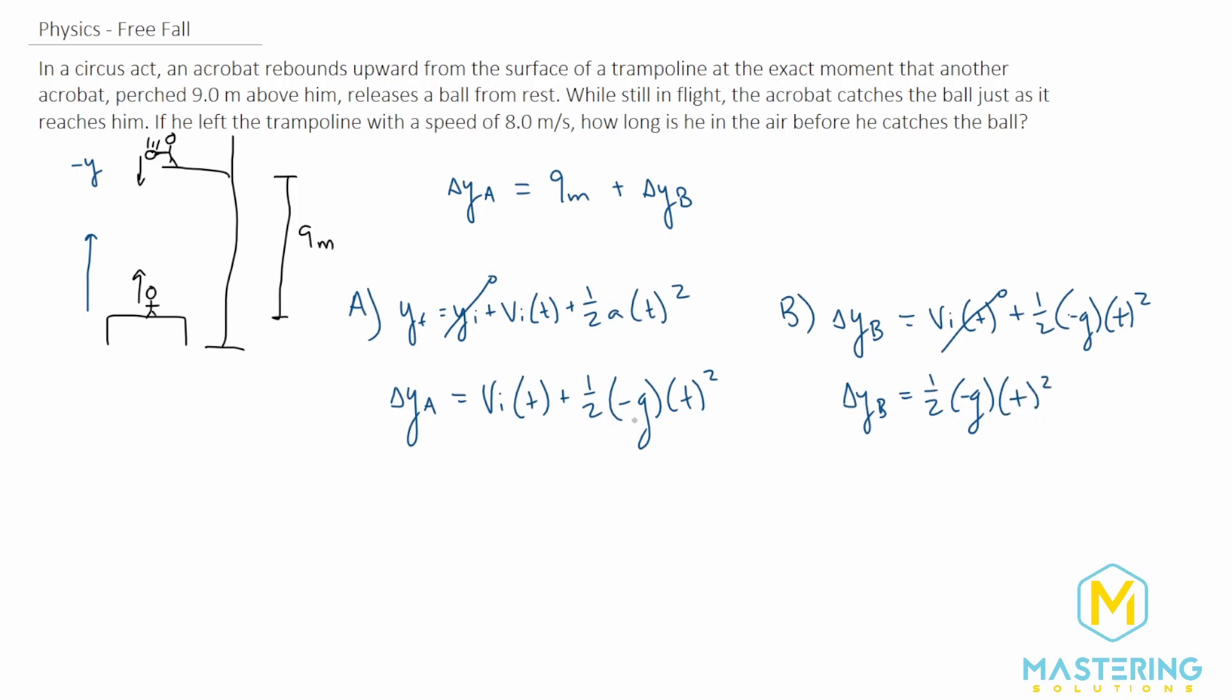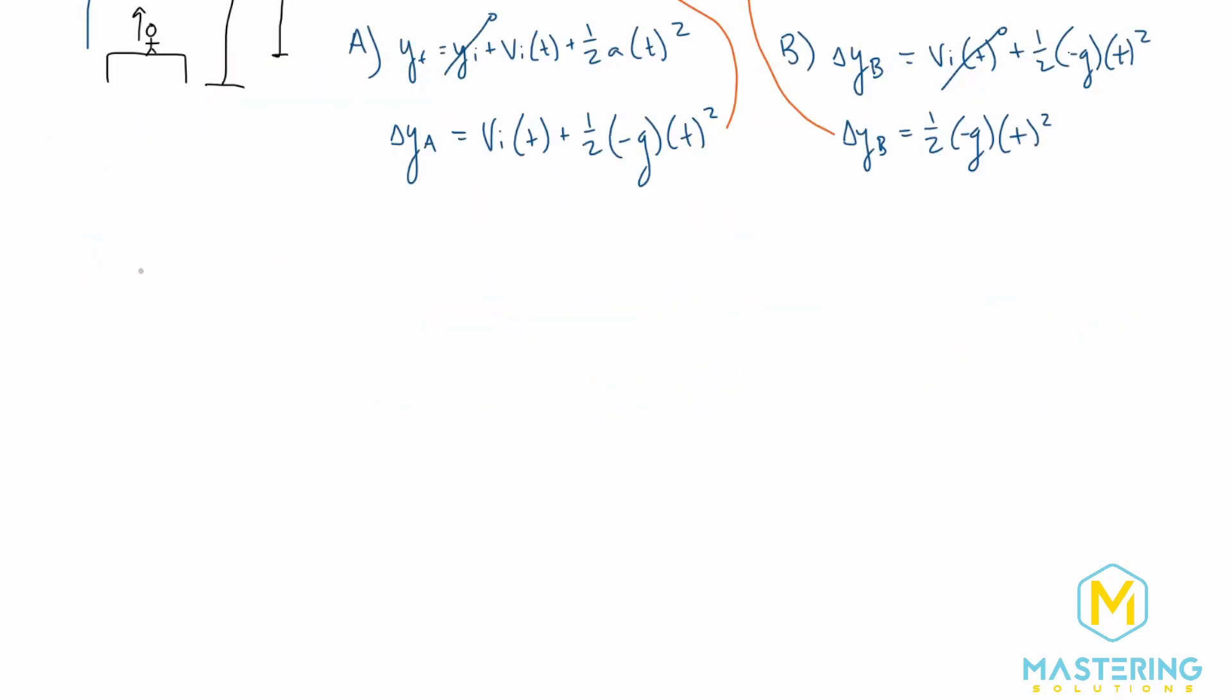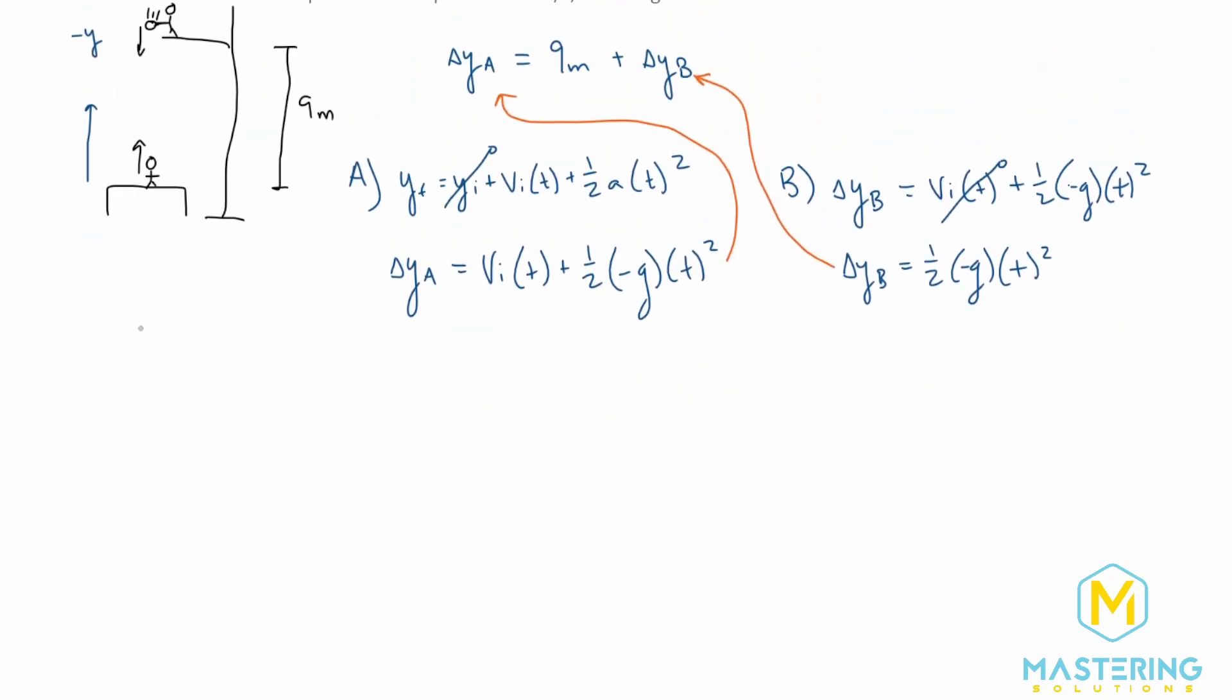So now we have our two formulas, so now all that's left is to plug them into here. Okay, so let's rewrite our equation down here. So we have Δy_a equals nine meters plus Δy_b. And now let's plug in, so we have